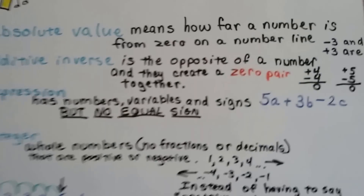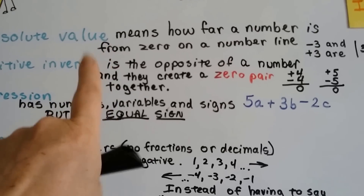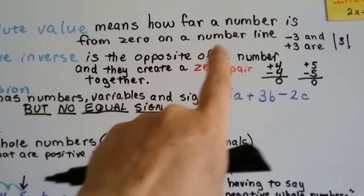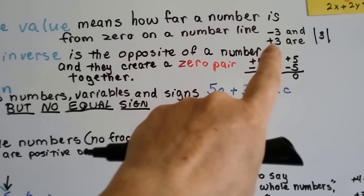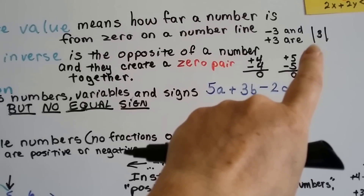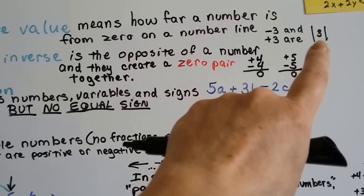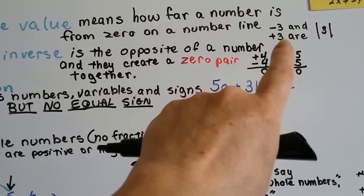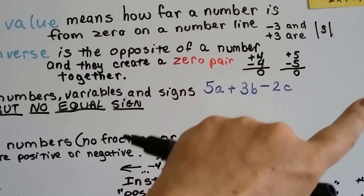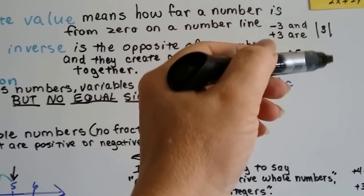Let's take a look at these vocabulary words. Absolute value means how far a number is from zero on a number line. A negative three and a positive three are both three away from zero, so we don't put a sign inside the absolute value bars. It's three away from zero whether it's negative or positive. That's its absolute value: three.